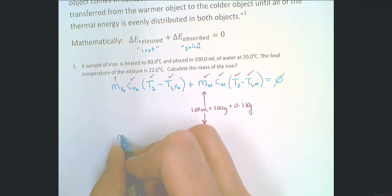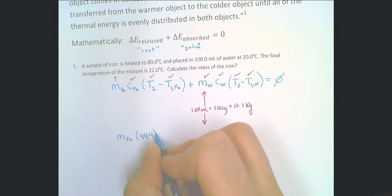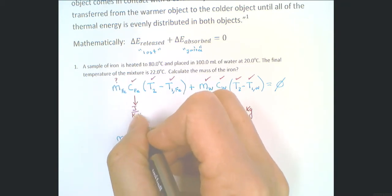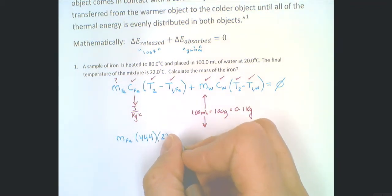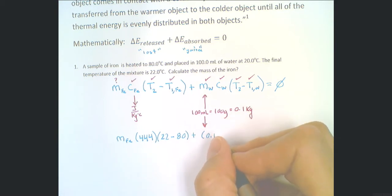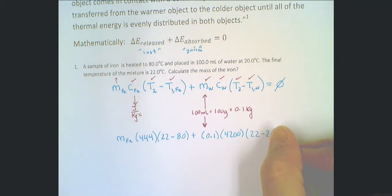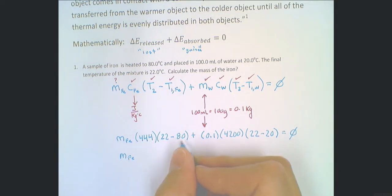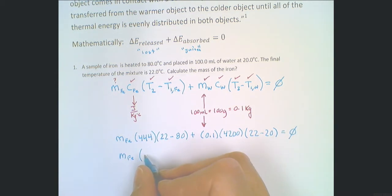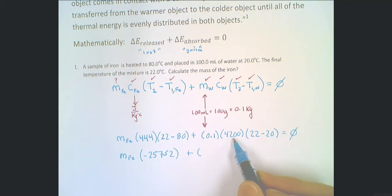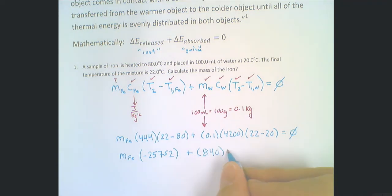So we write this out as: mass of iron times 444 joules per kilogram per degree Celsius times (22 minus 80), plus 0.1 kilograms times 4200 joules per kilogram per degree Celsius times (22 minus 20), equals zero. These specific heat capacity values can be looked up online or in your textbooks. Multiplying through, the iron term gives negative 58 times 444, which is about negative 25,752, and the water term gives 2 times 4200 times 0.1, which equals 840.